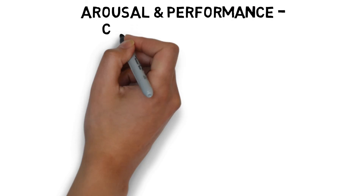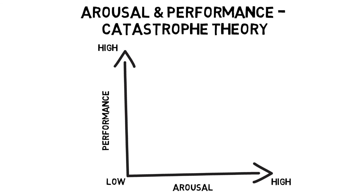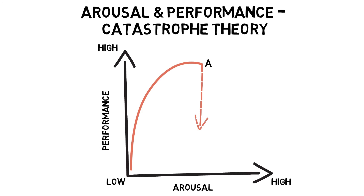Catastrophe theory is a variation of the inverted U theory. This theory suggests that performance does not always decline gradually after the optimal level of arousal has been reached. Instead, it can be a dramatic decline or catastrophe, such as when a performer tries too hard. Point A represents the optimal level of arousal. Point B shows a drastic decline in performance, where performance will head one of two ways. Point C shows performance still deteriorating. Point D shows performance recovery, but it is important to note that this does not always return to the optimal level of arousal immediately.